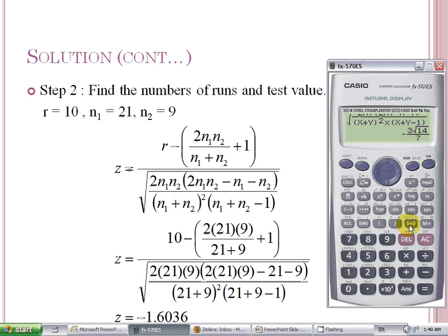If I press SD, it will change to decimal, that is negative 1.60356, that is the value of Z. Thank you.